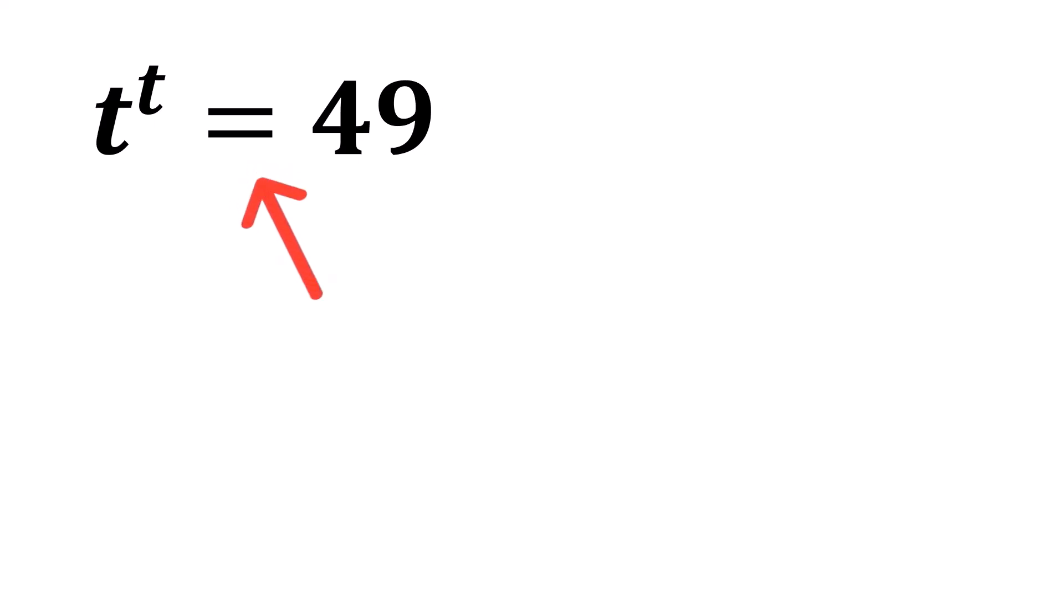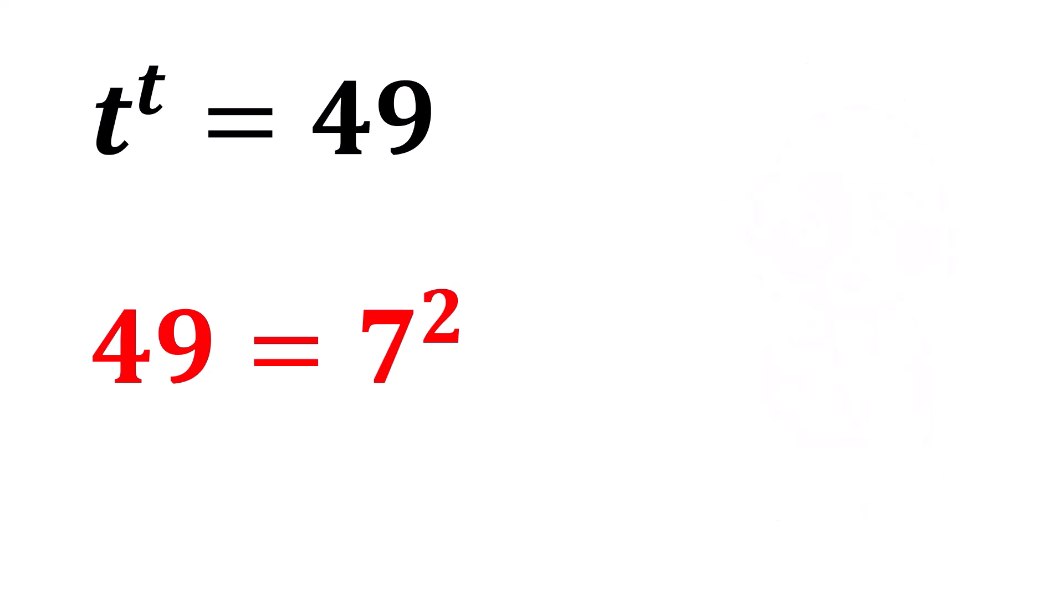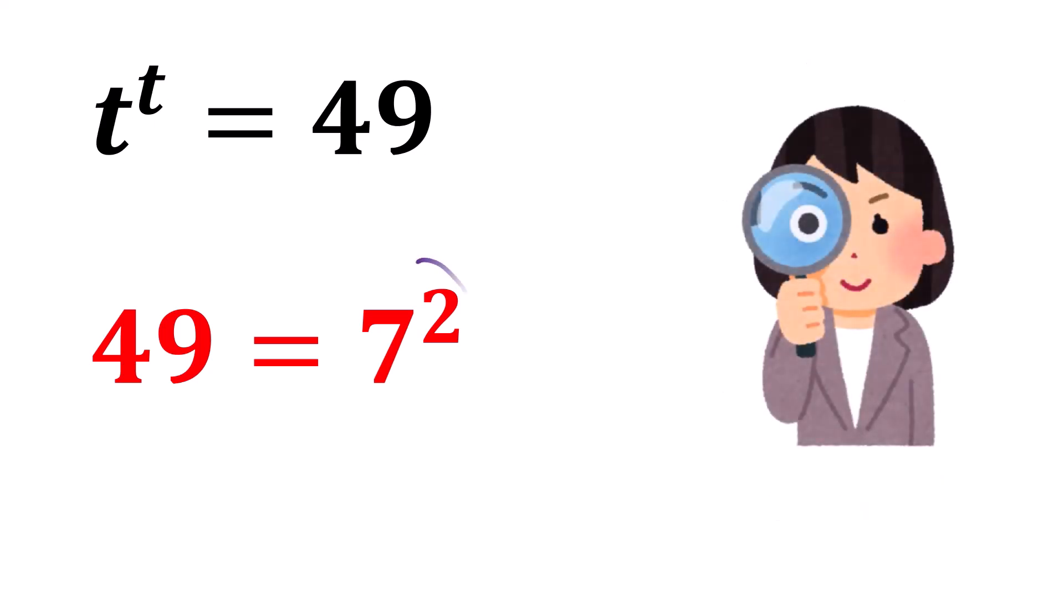t to the power t equals 49. At first, what comes to mind is that 49 is equal to 7 squared. But look carefully.